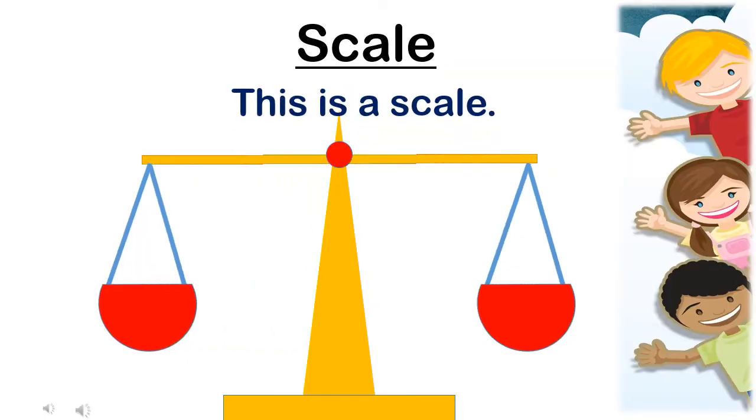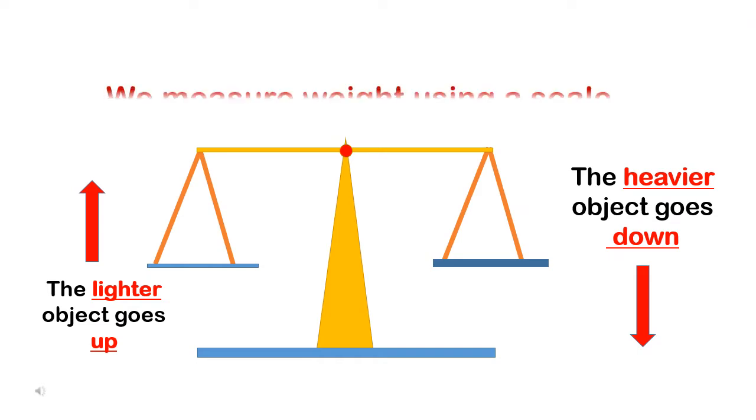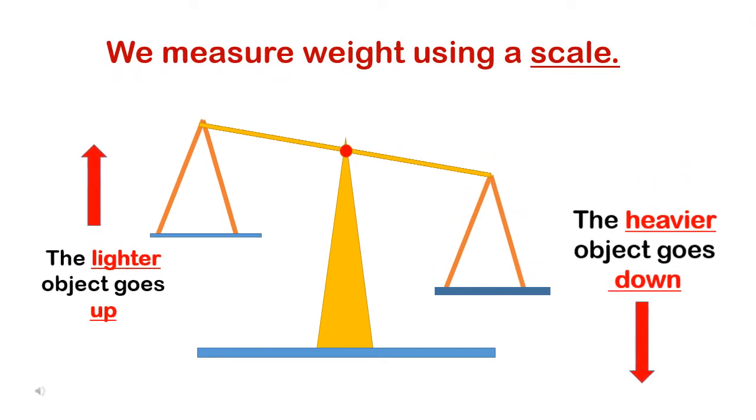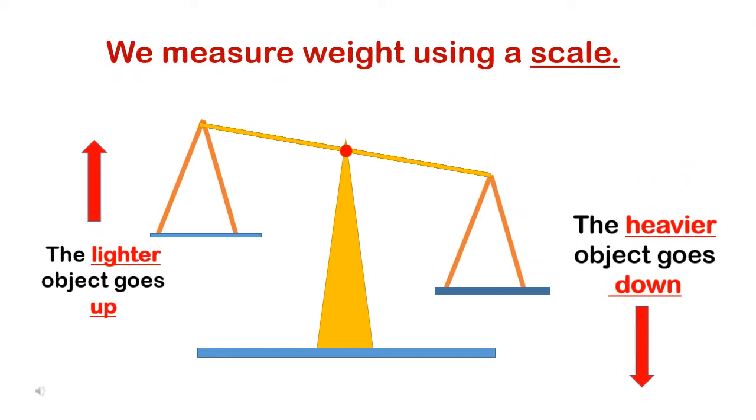Look at this. This is a scale. We use a scale to measure the weights of objects. We measure weight using a scale. Can you see? The side with the lighter object goes up, and the side with the heavier object goes down.